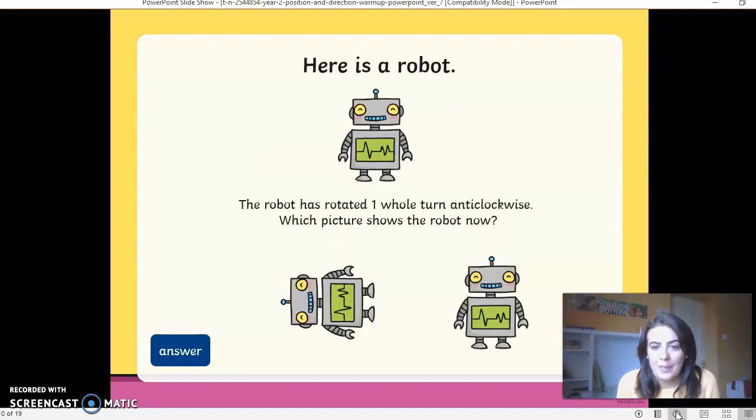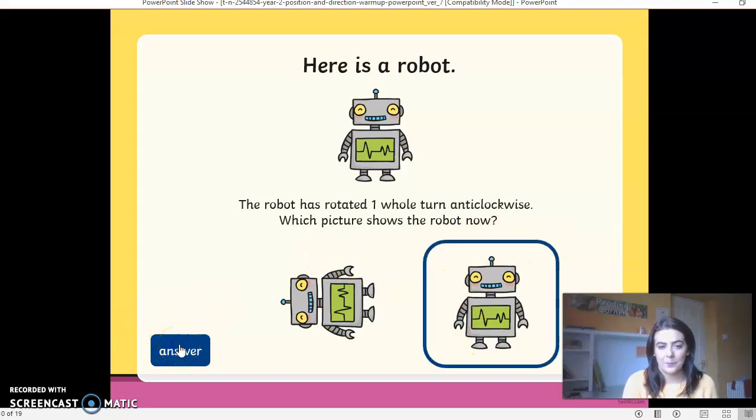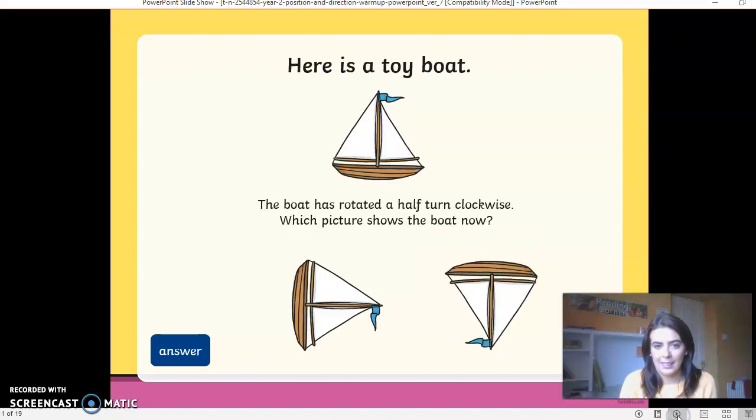So here is a robot. So now it's quiz time. The robot has rotated one whole turn anticlockwise. Which picture shows the robot now? So it's turned one whole turn the whole way around. Which one do you think it is? Is it going to be this one that's a quarter turn or this one that's upright? Let's have a look and see. Correct. So he has just turned one whole turn, which means he's back up to the correct position again.